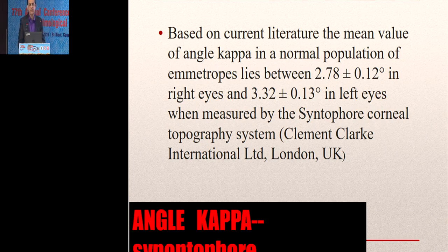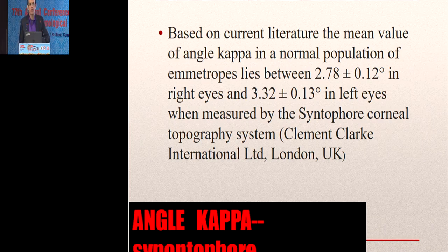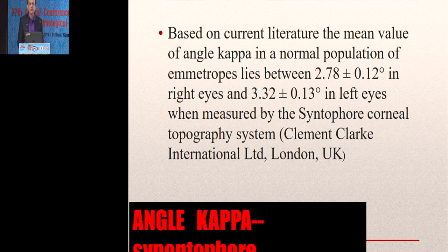Angle kappa — traditionally you take a torch and see the corneal reflex which is nasal. The center of the pupil and angle kappa of 0.5 mm — who can look at a torch and say 0.5 mm? The accurate way of measuring angle kappa was with a synaptophore. On a synaptophore, normal values are 2.7 to 3.3, different for right and left eye.